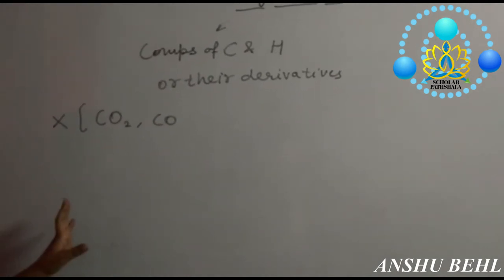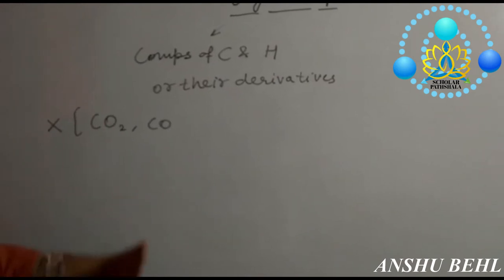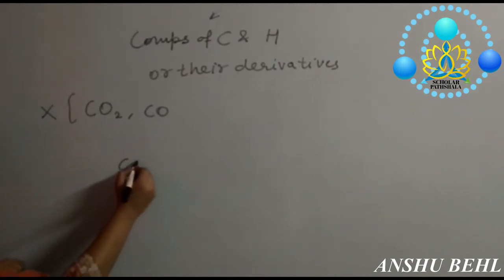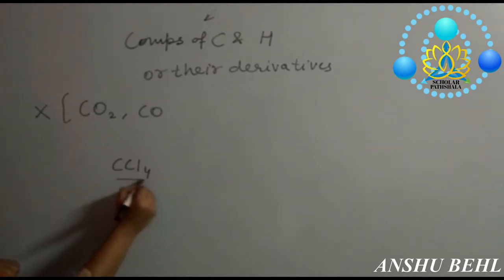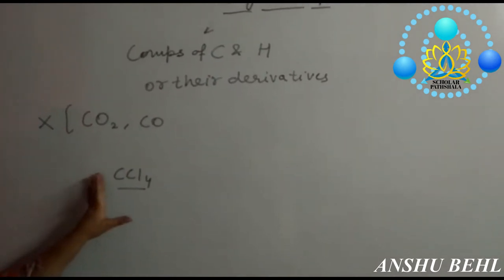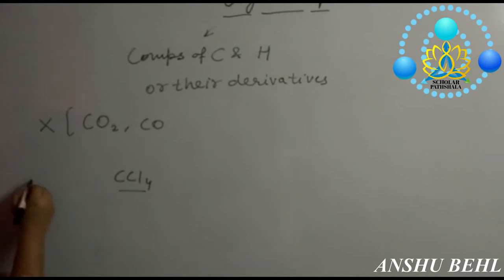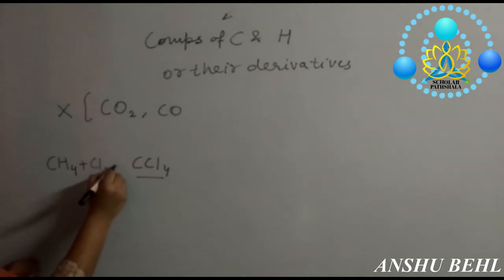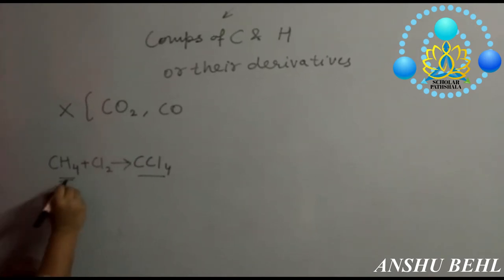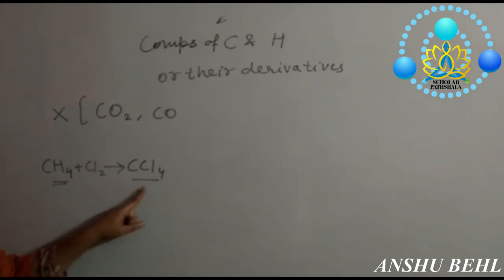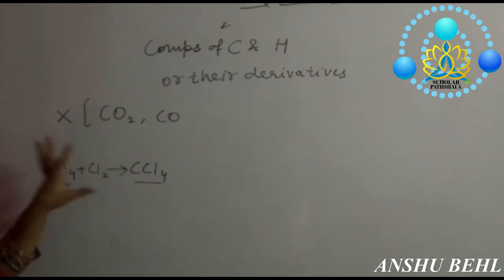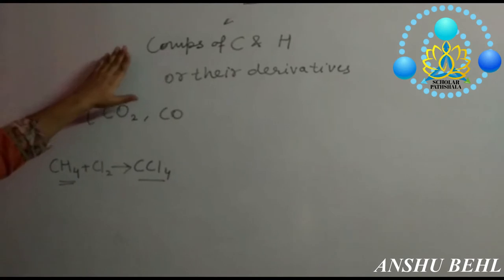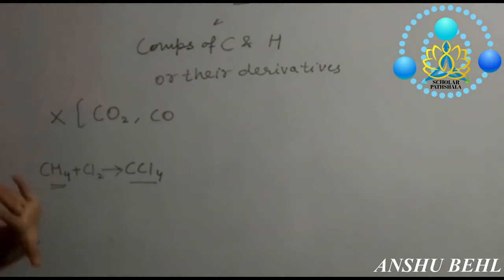Organic compounds are those which have carbon and hydrogen or their derivatives. For example, CCl4 is also an organic compound even though it doesn't have hydrogen, because it is a derivative of methane — we prepare CCl4 by the reaction of methane with chlorine. It is a substituted product. So there's no need to be confused: organic compounds are those which have carbon and hydrogen.